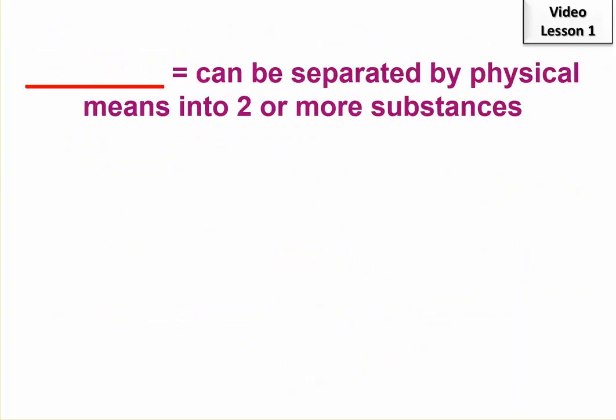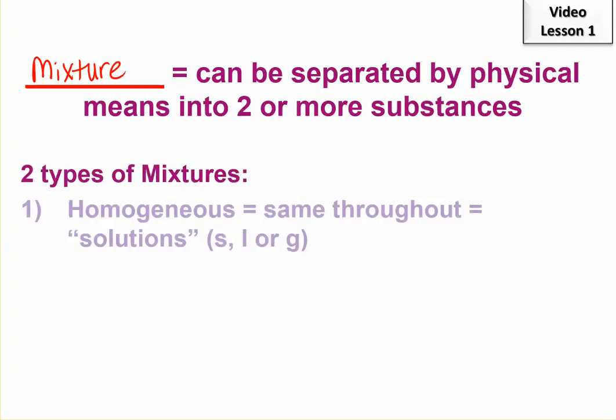Our other type of matter was the mixture. Mixtures can be separated by physical means. There are two types. Homogeneous or homogenous are two versions of the same word. But anyway, they are the same throughout. And solutions don't have to be liquids. A lot of times that's what we think about, but they can be solid, liquid, or gas. Like the air, you could say is a solution of oxygen, nitrogen, and a few other substances.